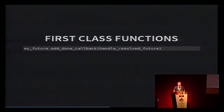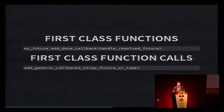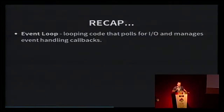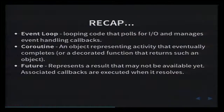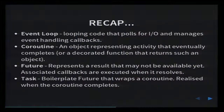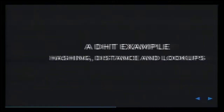Futures and tasks are a little bit like first-class function calls — we can pass them into functions and return them as values. We just might not know what the result is yet, but we can start adding callbacks. Quick recap: an event loop is looping code that polls for I/O and manages event-handling callbacks. A coroutine is an object representing activity that eventually completes. A future represents a result that may not be available yet, and callbacks are executed when it resolves. Tasks are future classes that wrap coroutines, realized when the coroutine completes.